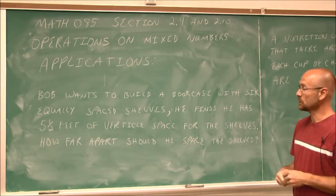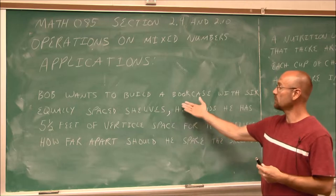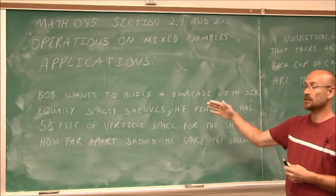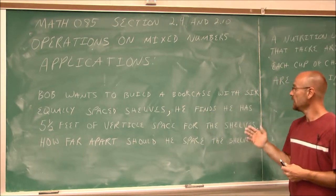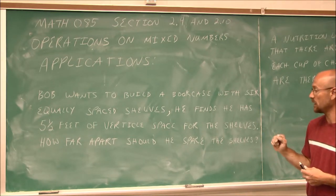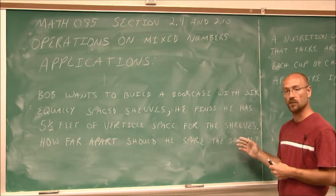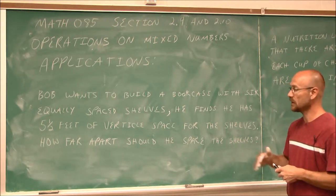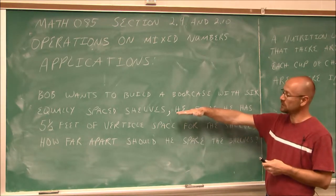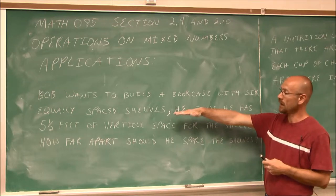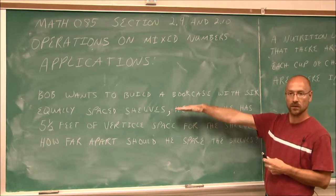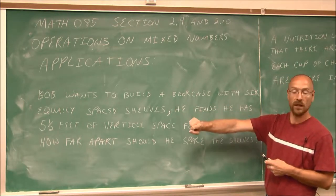Our first application: Bob wants to build a bookcase with six equally spaced shelves. He finds he has 5 and 1/2 feet of vertical space for the shelves. How far apart should he space the shelves? So if we think about this, he has 5 and 1/2 feet of shelf, that's about this high. We're not going to put anything above the shelf because we don't have the vertical space for it.